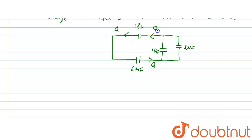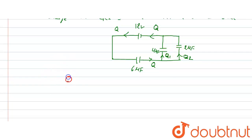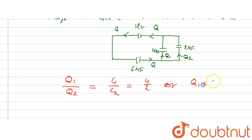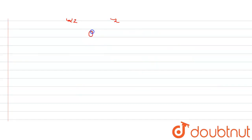Charges flow as Q through the main circuit and split as Q1 and Q2. Since the 4 microfarad and 2 microfarad capacitors are connected in parallel, the potential difference across them is the same. Therefore, Q1/Q2 = C1/C2 = 4/2, which means Q1 = 2 × Q2.